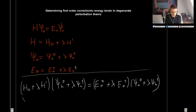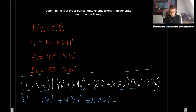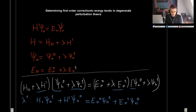The terms of Lambda to the first power give us H0 Psi_N1 on the left. On the right-hand side we have E_N0 Psi_N1 plus E_N1 Psi_N0. This is precisely what we found in the previous video in the case for non-degenerate perturbation theory.